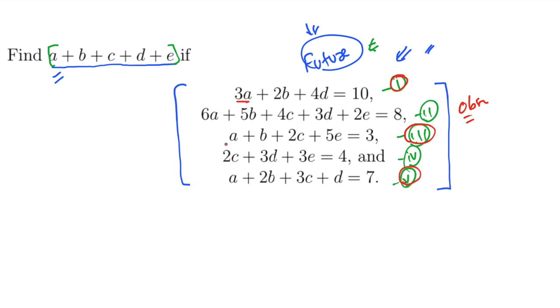That one is nothing but 3A plus A plus A is nothing but 5A. Plus 2B plus B plus 2B is nothing but 5B. Plus 2C and 3C is nothing but 5C. We have a D. 4D plus D is nothing but 5D.